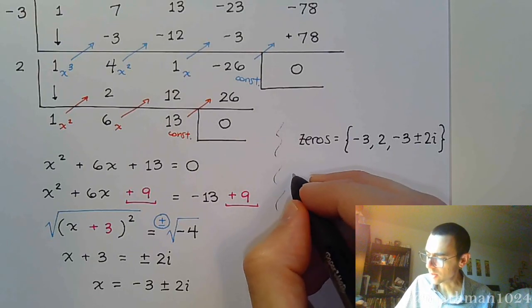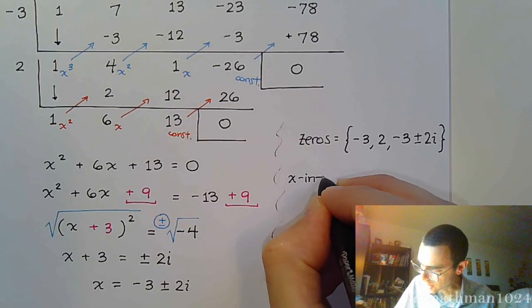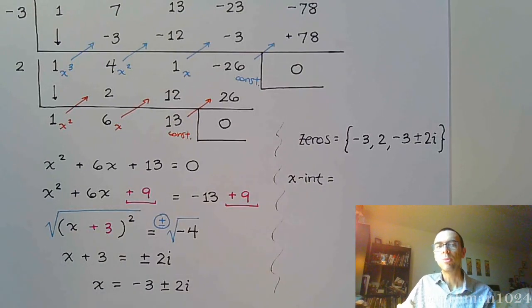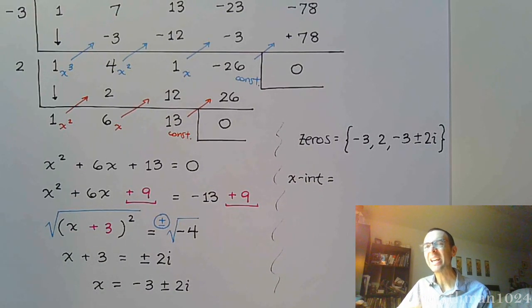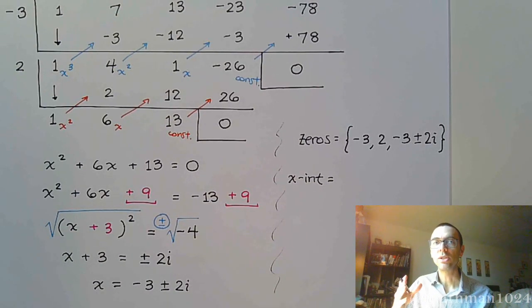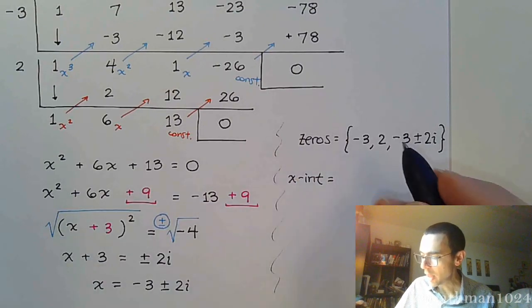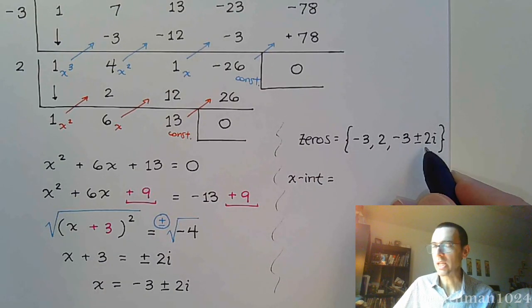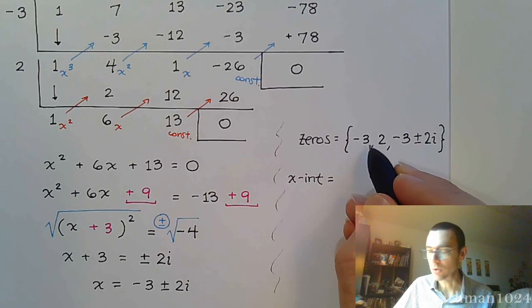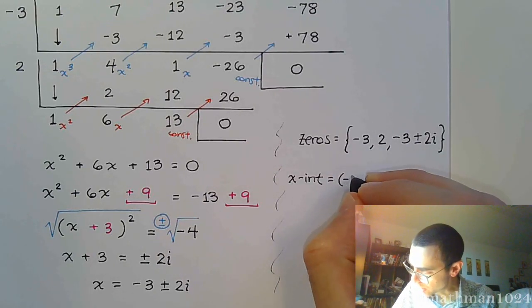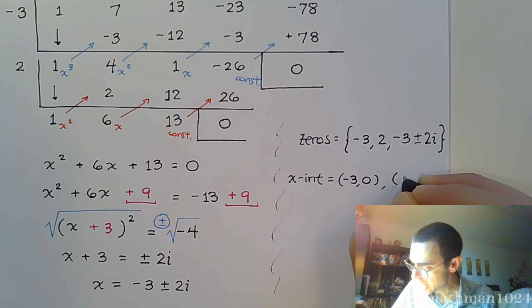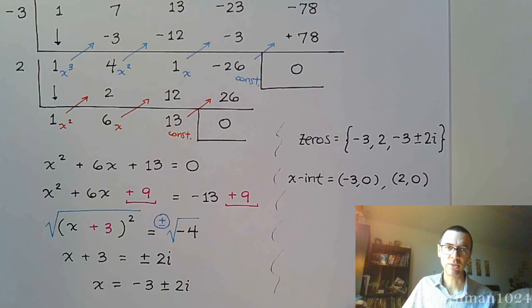Finding all of the intercepts. All right, so let's look at the x-intercepts. Remember, for the x-intercepts, we only get an x-intercept from a zero that's a real number. That means these guys right here do not give us x-intercepts, just these two. So that would be the ordered pairs, negative 3, 0, and the ordered pair 2, 0. Again, those guys don't give us anything.